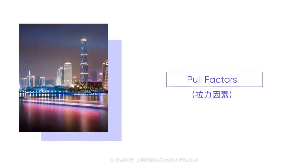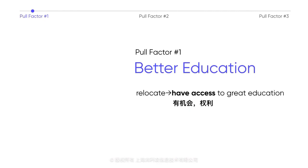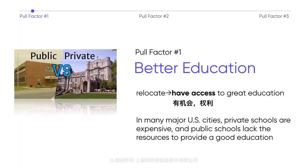Now that we've talked about push factors, we will discuss more positive causes of migration — pull factors — such as better education, job opportunities, and standards of living. For many families around the world, education is a strong pull factor. Young parents often relocate from the city to the suburbs, or from the countryside to the city, to make sure their children have access to a great education. In many major U.S. cities, private schools are expensive and public schools lack resources. Once a couple has children, they may move to the suburbs where public schools are better, or invest in expensive city schools that promise to increase their child's chance of going to a good university.